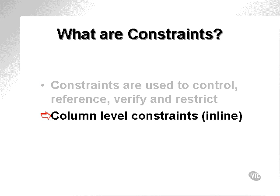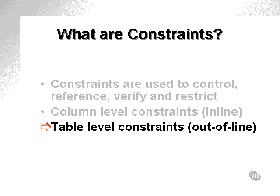There are different levels of constraints. Constraints can be column level, sometimes called inline, and table level, sometimes called out of line. Column level constraints are constraints that are attached to individual columns within a table. A table level constraint is attached to the table as a whole.